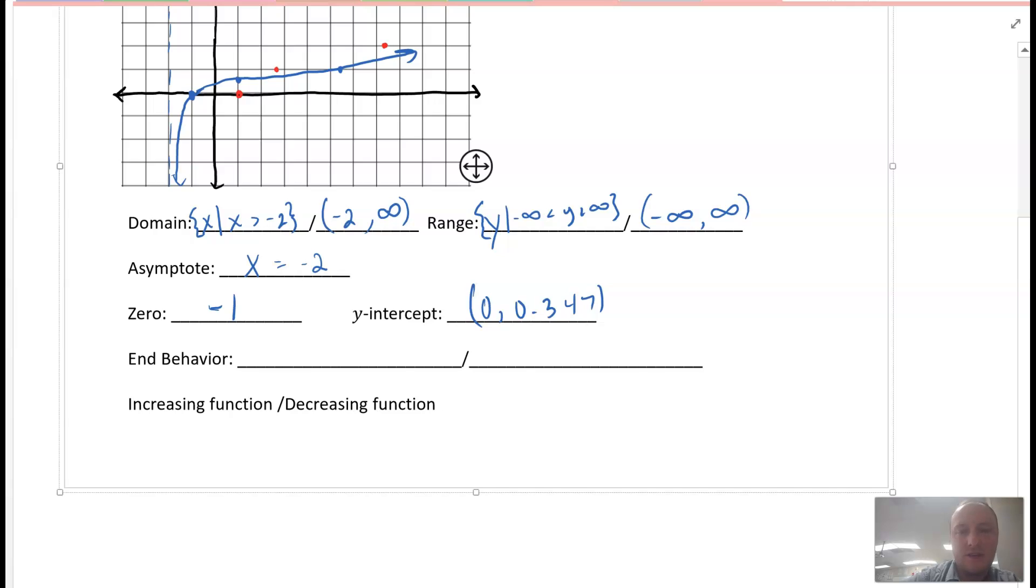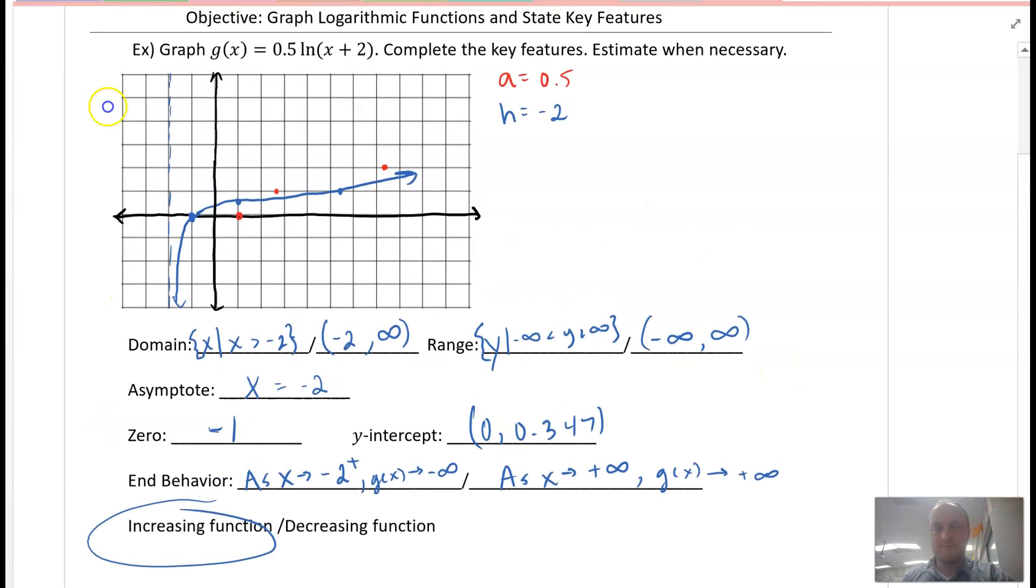End behavior - we'll take the left side first. So as x is approaching this x value which is negative 2, and we're approaching from the right so I'll use my plus superscript sign, g of x is going to negative infinity. And as x approaches positive infinity, as our x values get bigger and bigger, our function's going to increase to positive infinity. And this function is increasing.